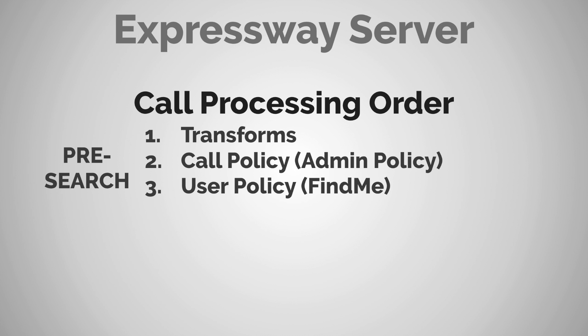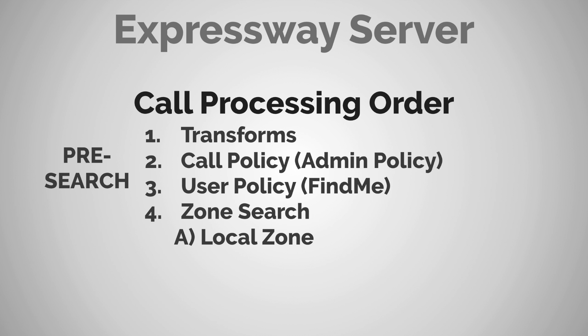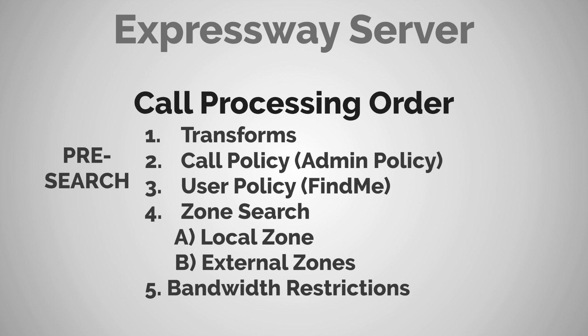User policy is also known as find me. After pre-search, the next step is a zone search, which includes the local zone, subzones, membership rules, registered endpoints, and bandwidth restrictions. The first zone searched is the local zone, and if the alias isn't found there, it searches external zones — such as neighbor zones, traversal zones, DNS zones, and others. Once a match is found, the last check is whether any bandwidth restrictions apply.